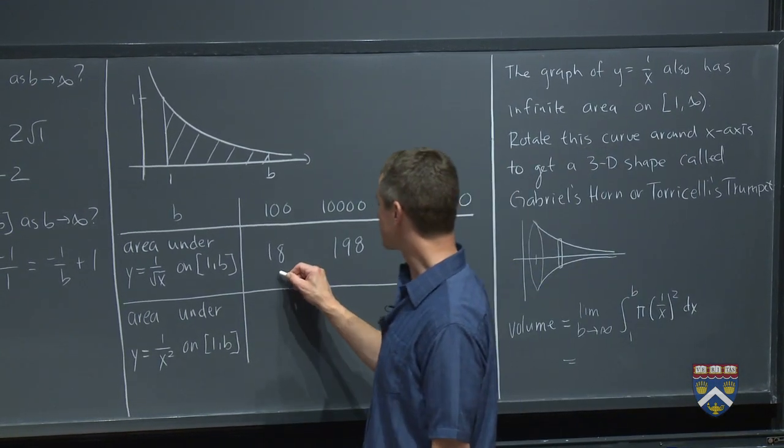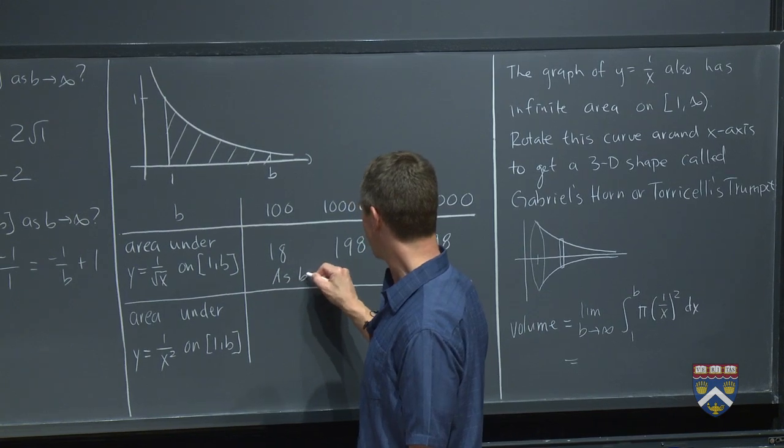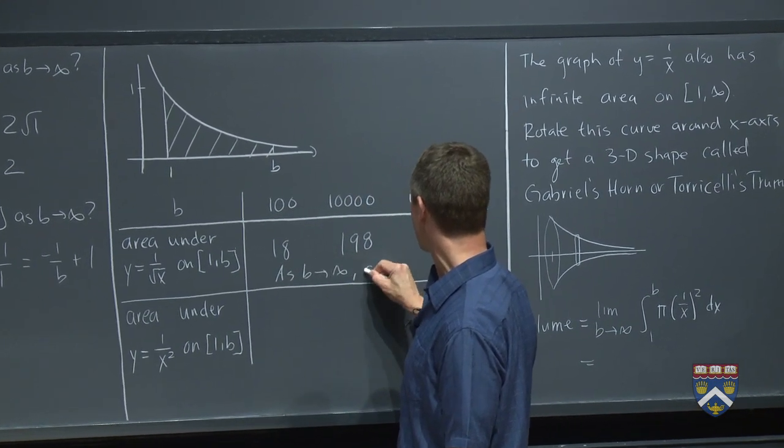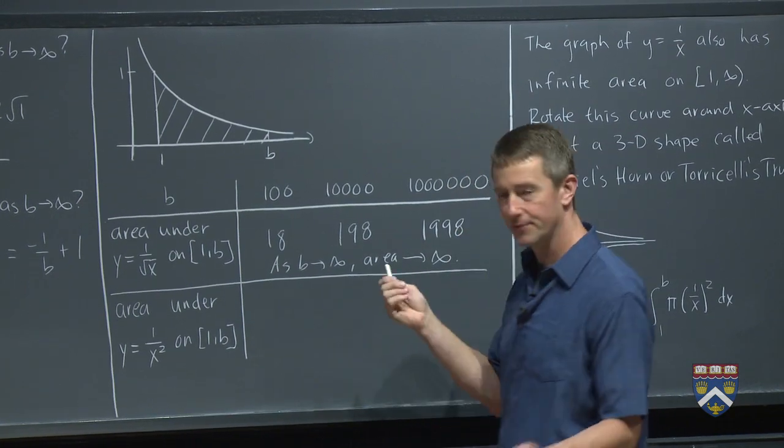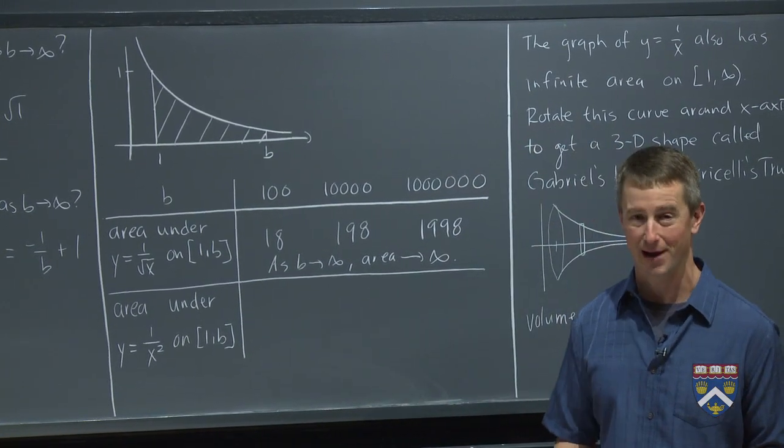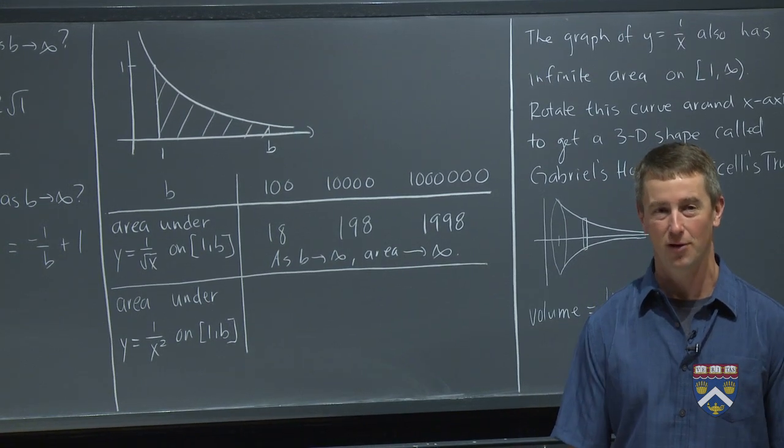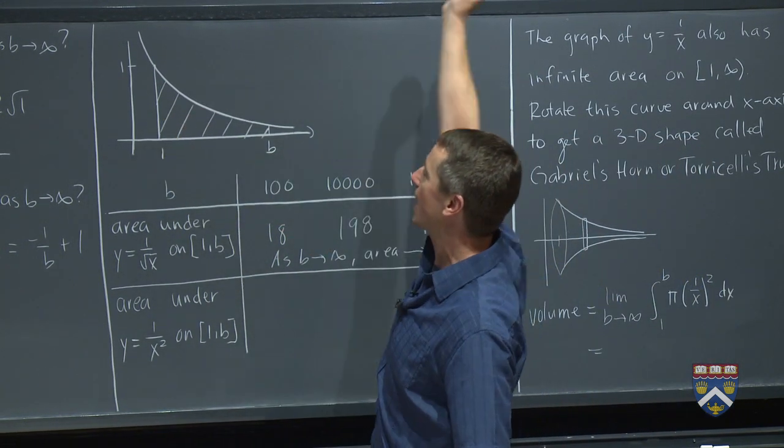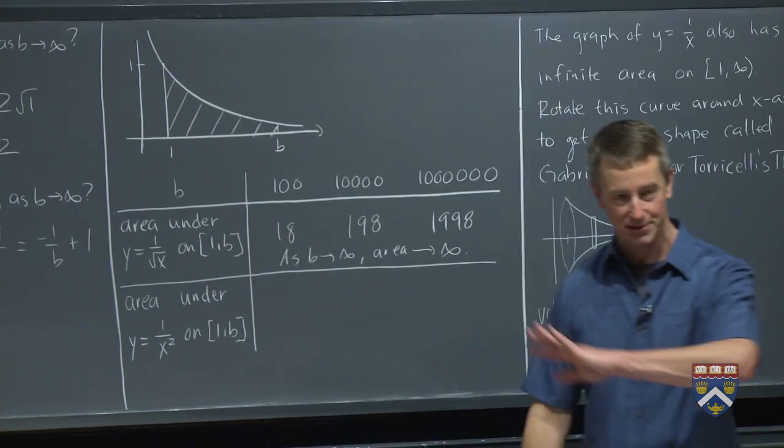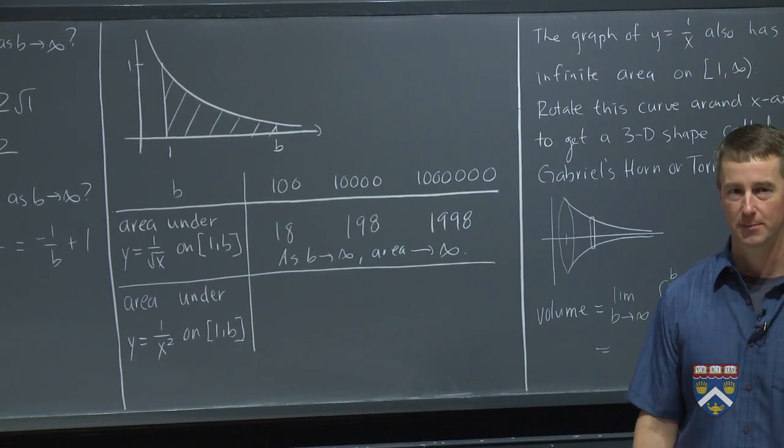So the shape is infinitely long and has infinite area as well. So probably no surprise there. Most shapes that you can imagine that are infinitely long should have infinite area, right? Certainly if I had drawn, say, x squared and asked how much area it has from 1 to infinity, that would definitely be infinity.